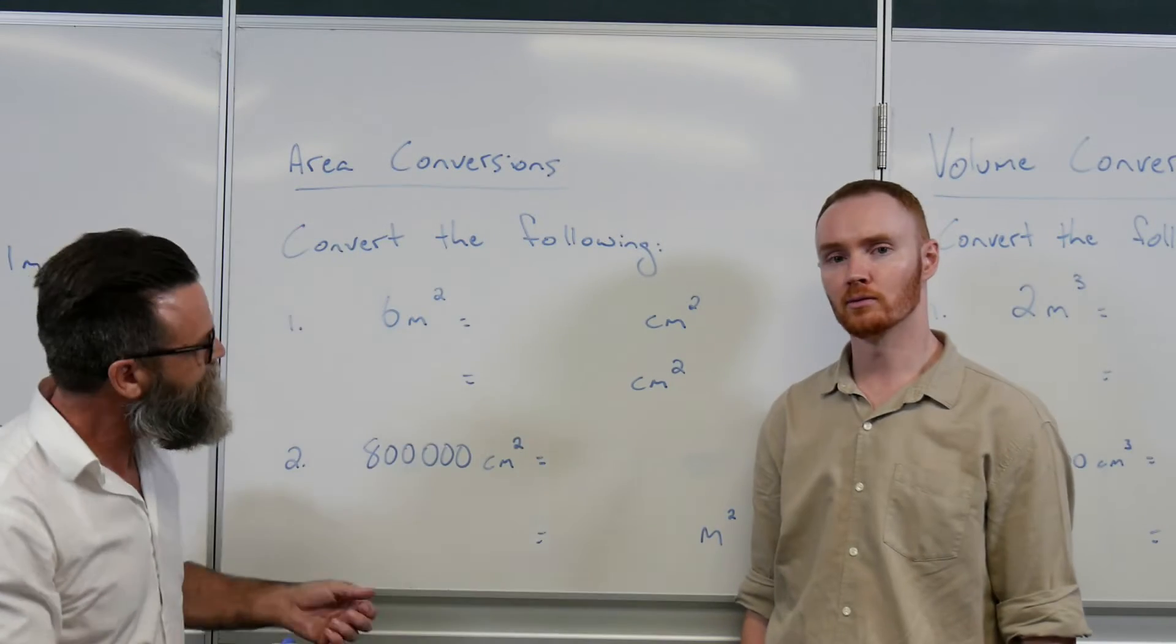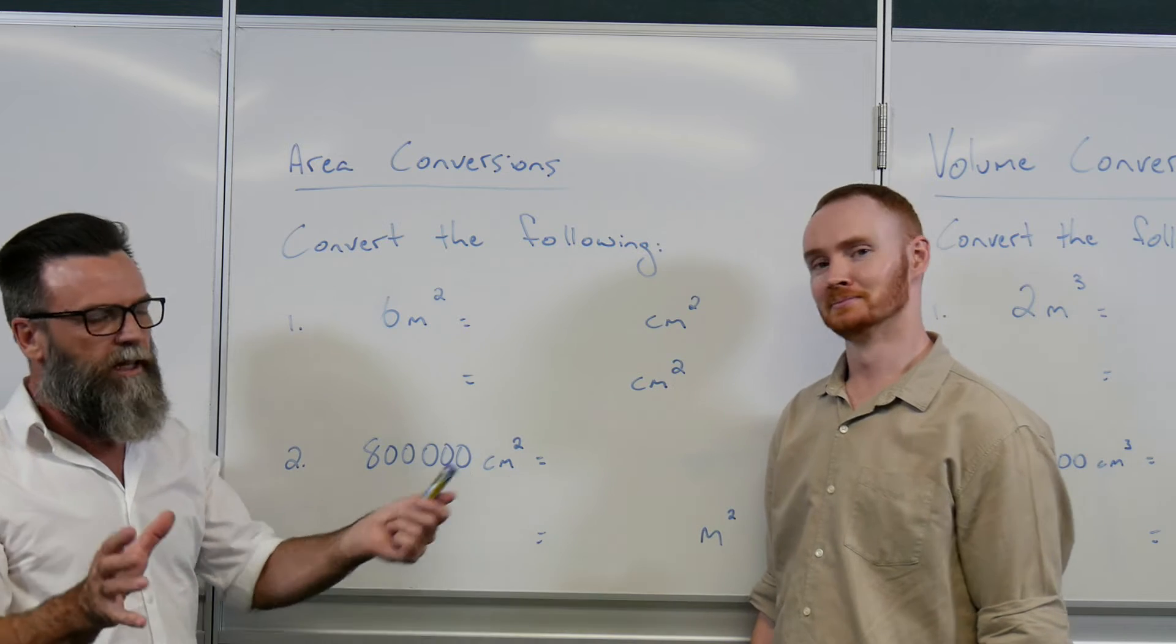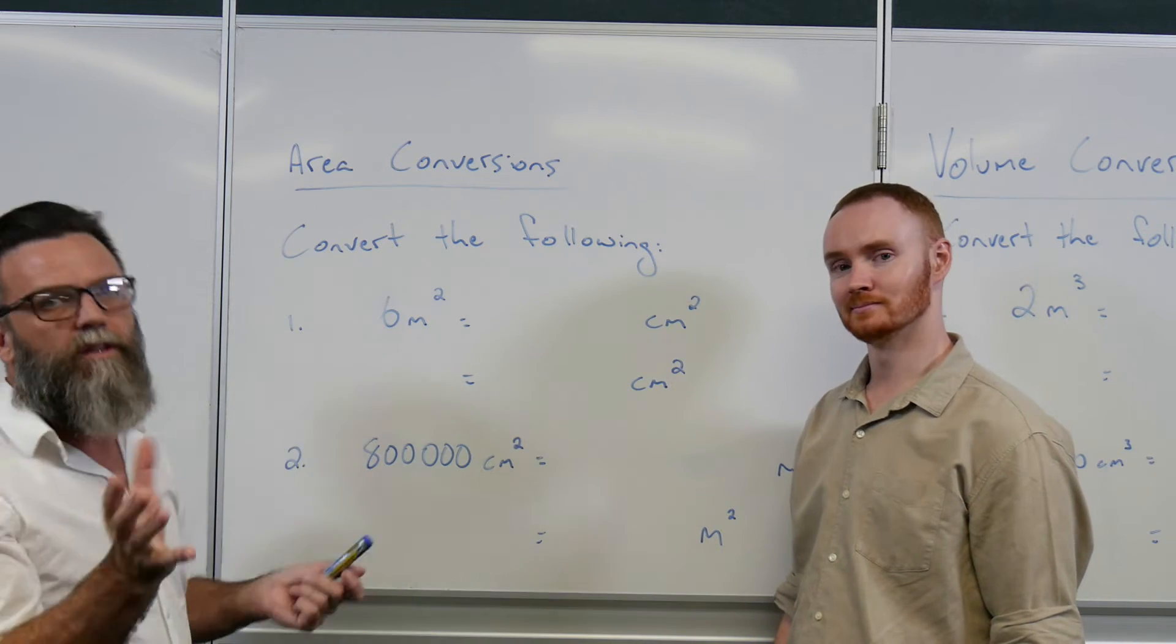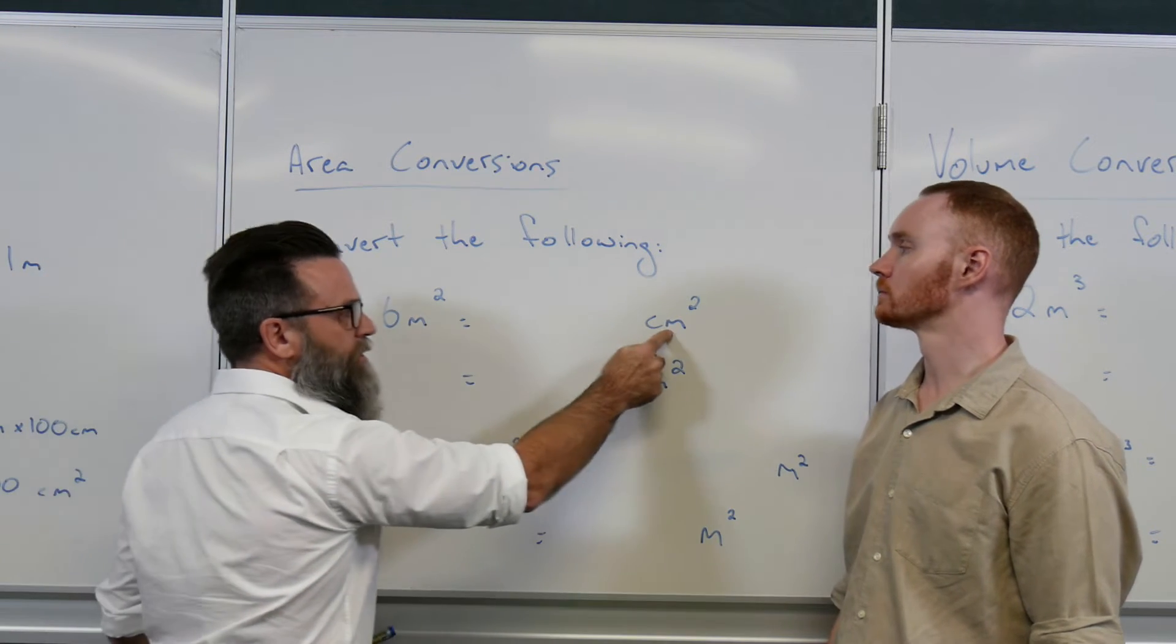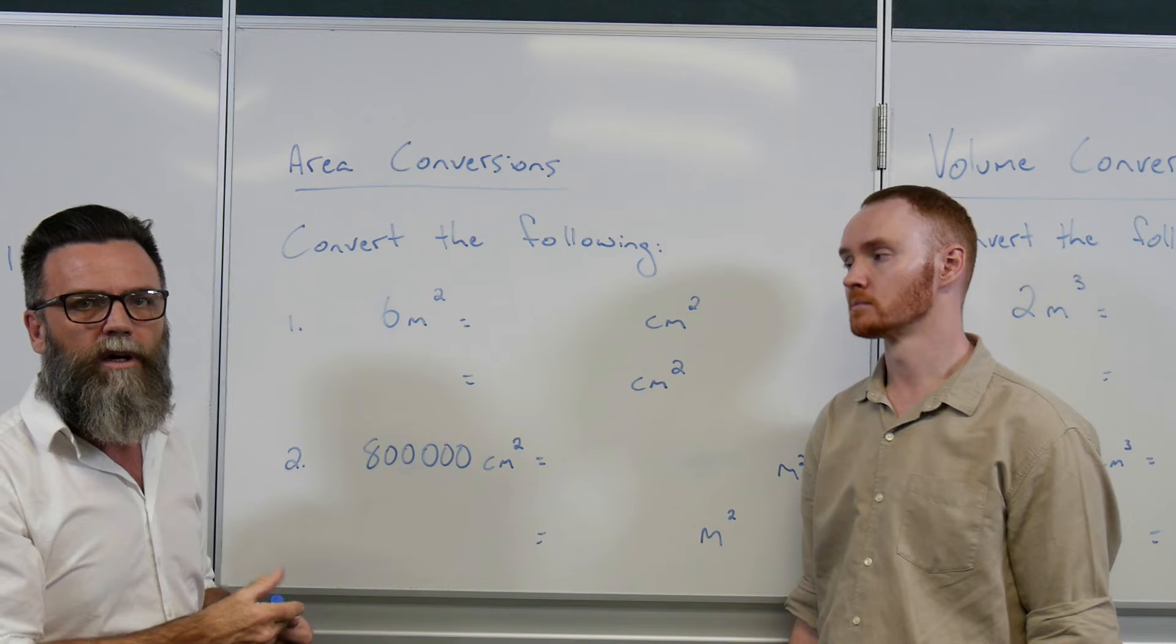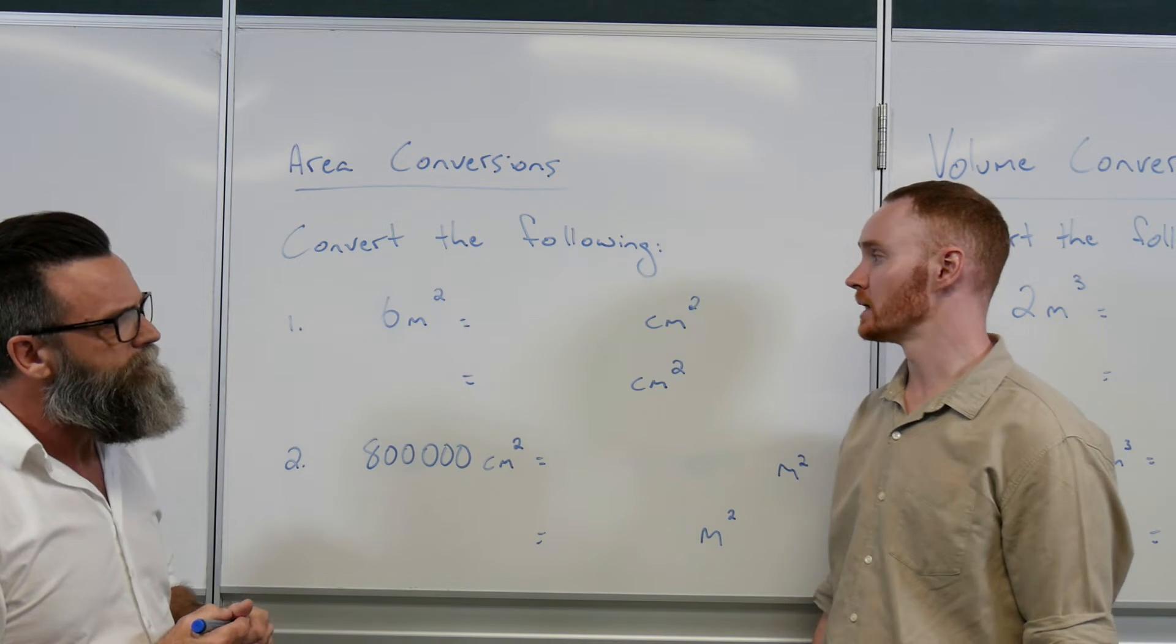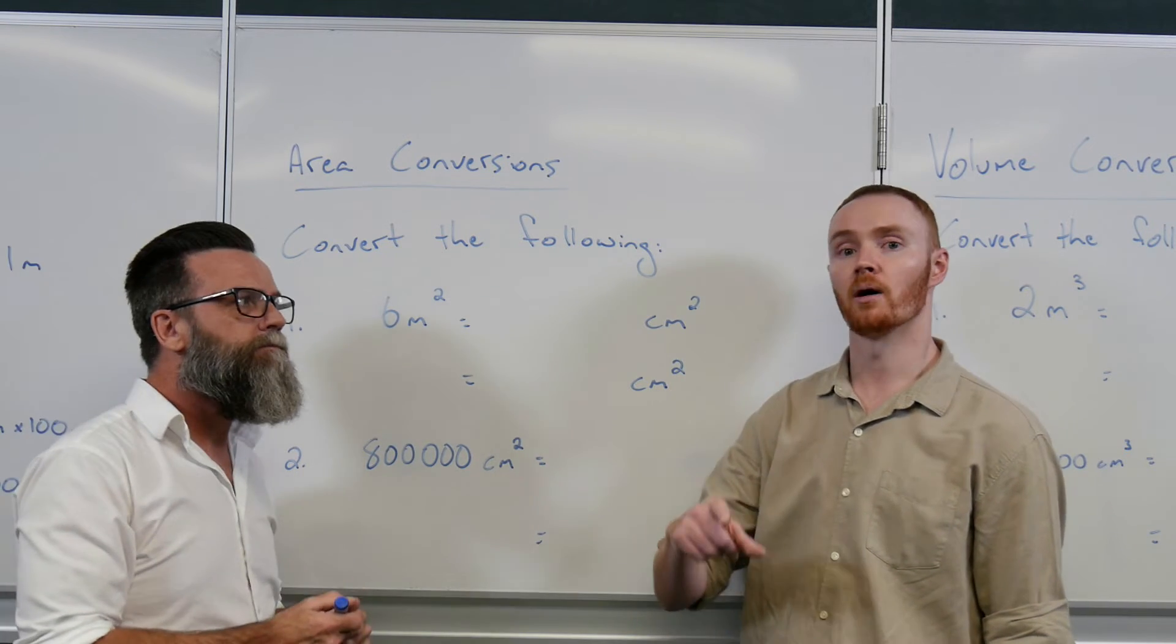Now some of you might look at that and think, how am I going to remember that? It's as simple as this. If we convert from meters to centimeters, we know we need to times by 100. If we're talking area and there are in fact two dimensions, we know we've got to do it twice. And that little two up the top of the meter squared and that centimeter squared is another reminder. We simply need to do that conversion twice.